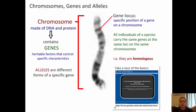Each gene has its own locus, or location, on a chromosome. This dark band is a particular gene's location — a specific position of a gene on a chromosome. Remember that all individuals of a species have the same genes at the same locations on the same chromosomes. We consider those chromosomes within a species to be homologous chromosomes.